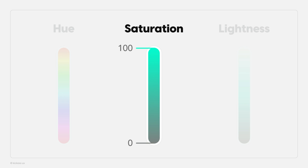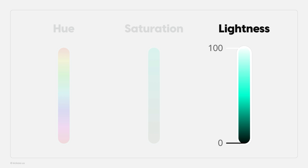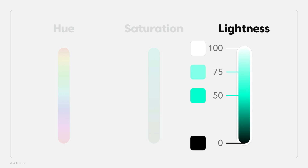Saturation values are from 0 to 100. An HSL code with 0 saturation means the color has no saturation, and 100 means it's fully saturated. Lightness values also range from 0 to 100, with 0 being black and 100 being fully white. If you have a lightness value of 50, it's an even balance of white and black, meaning the hue appears at its fullest potential. The higher you go on the scale, the more white you add to the color, and vice versa going down.